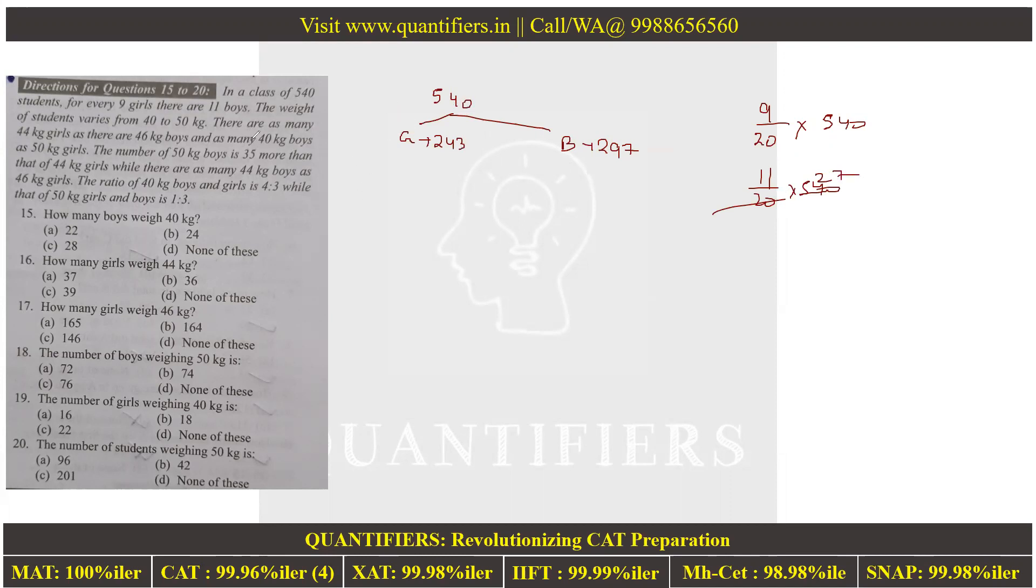Here are the weight categories: 44 kg, 46 kg, 40 kg, and 50 kg. There are as many 44 kg girls as there are 46 kg boys, as many 40 kg boys as 50 kg girls.